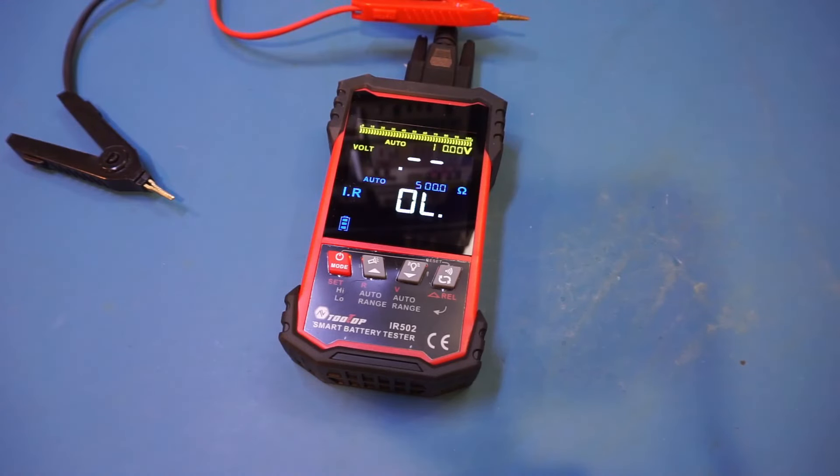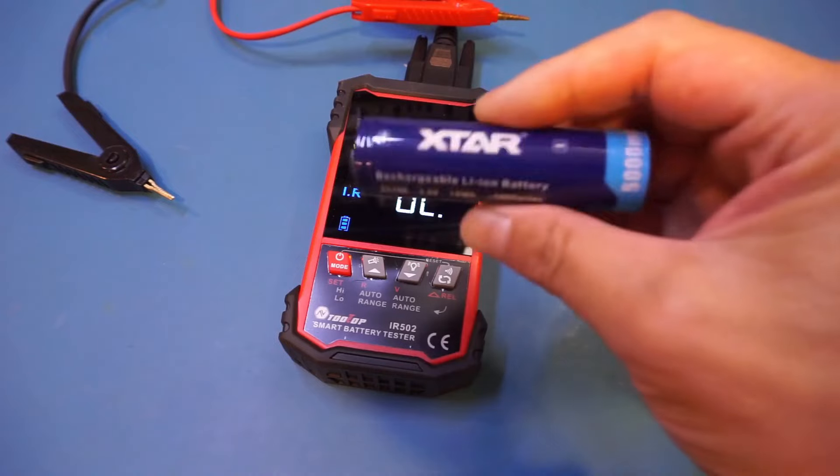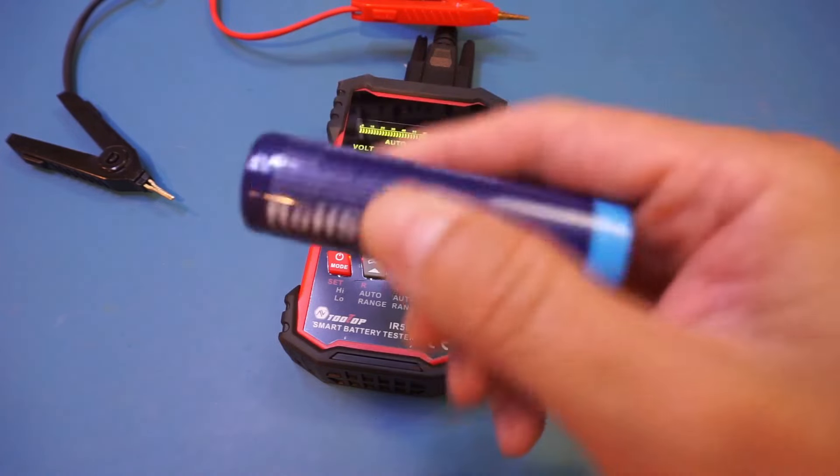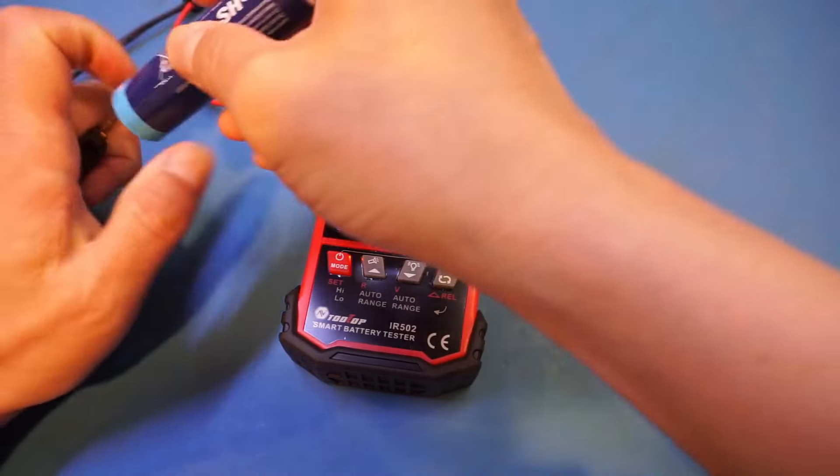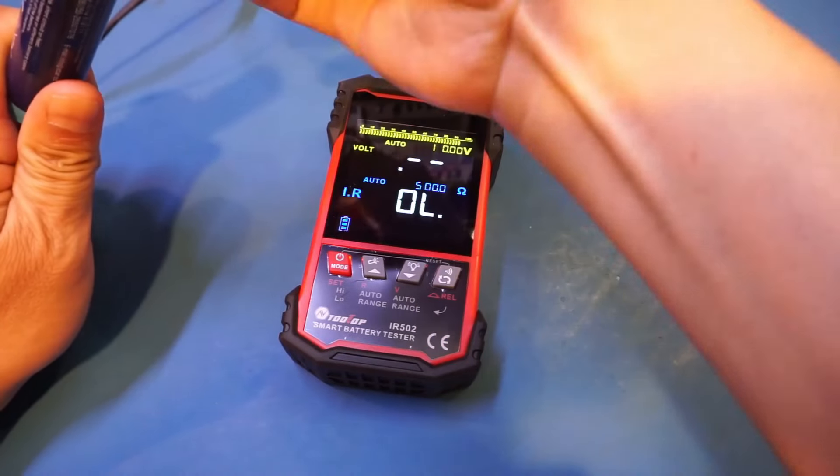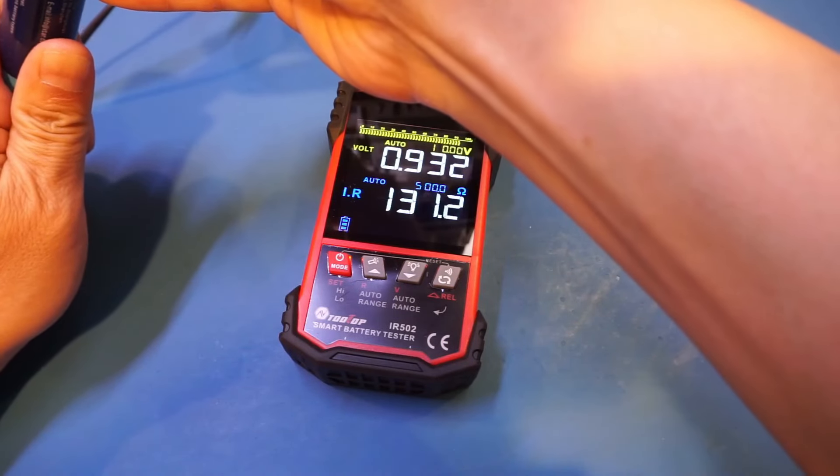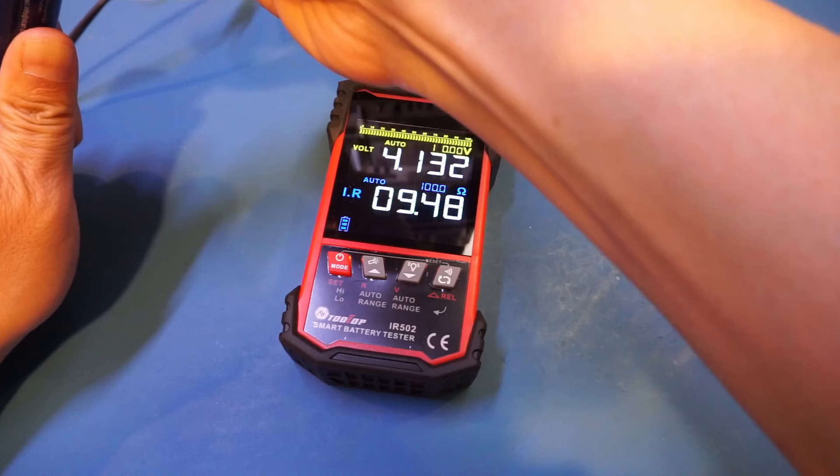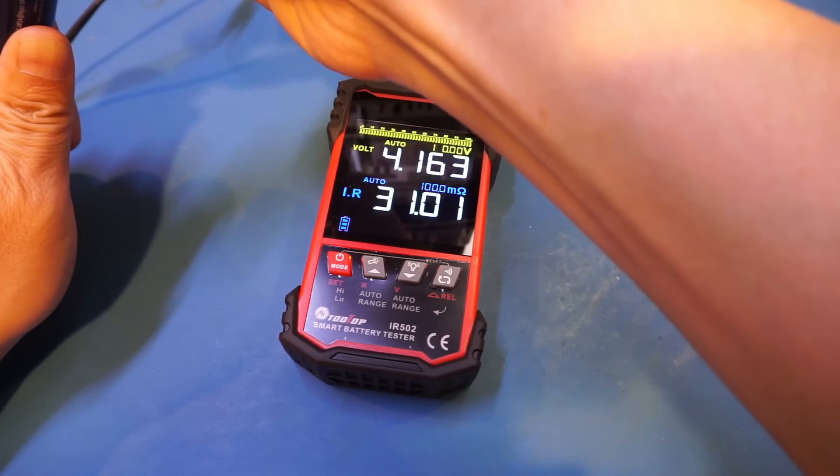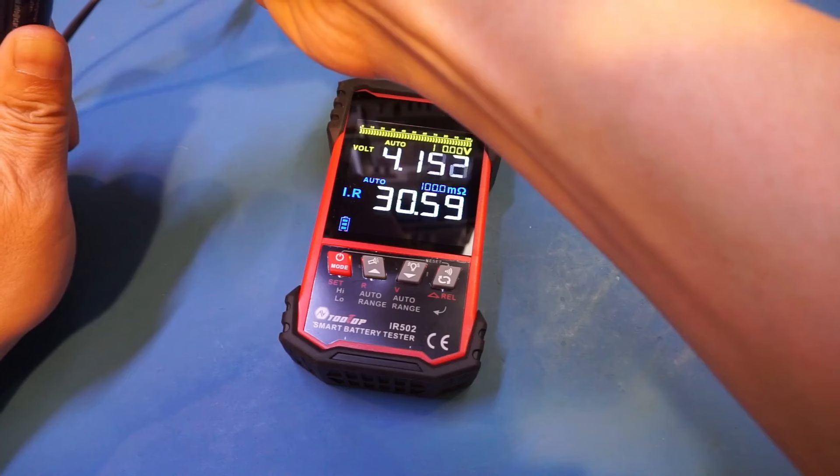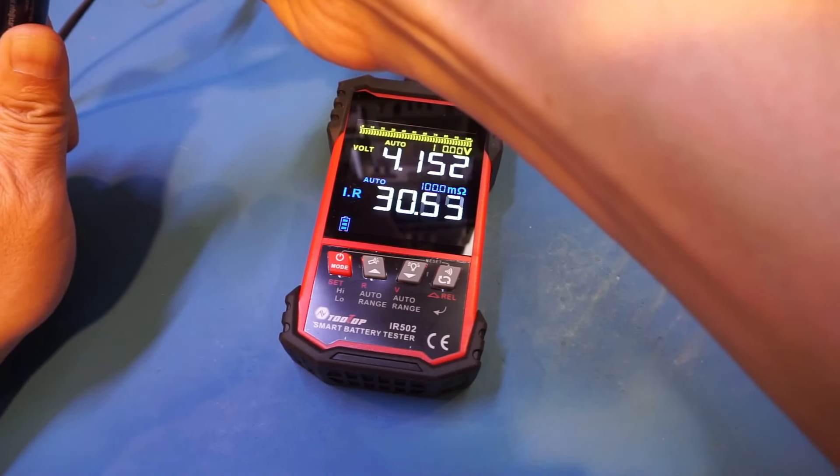One last battery I want to measure is a lithium ion battery. This one should have a very low internal resistance, so let's give it a go. And you can see we're measuring roughly 30 milliohms internal resistance here.